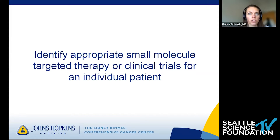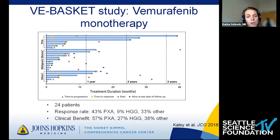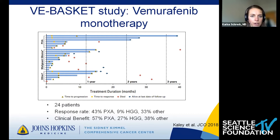A study of Vemurafenib monotherapy — a basket study that included about 24 patients with BRAF V600E mutations — showed the response rate for PXA was highest at 43%, while for malignant glioma it was lowest at 9%. But even though these tumors didn't shrink, patients lived longer than they should have with recurrent high-grade glioma. This was exciting.